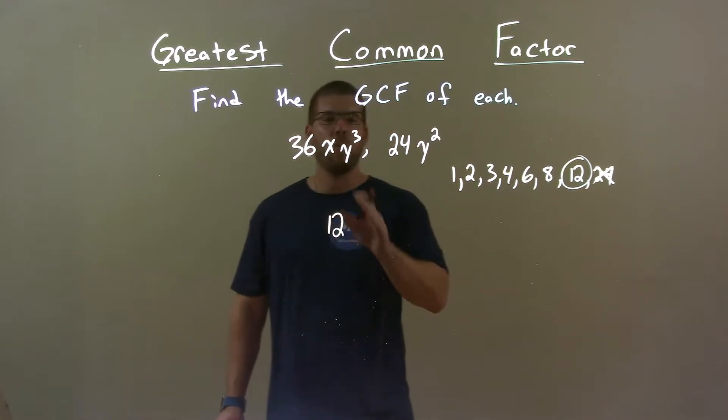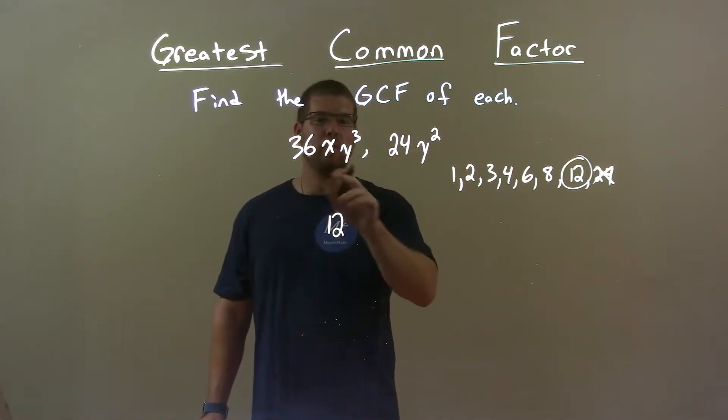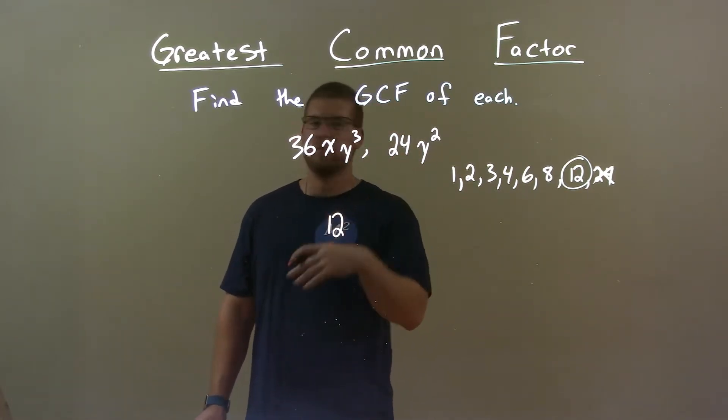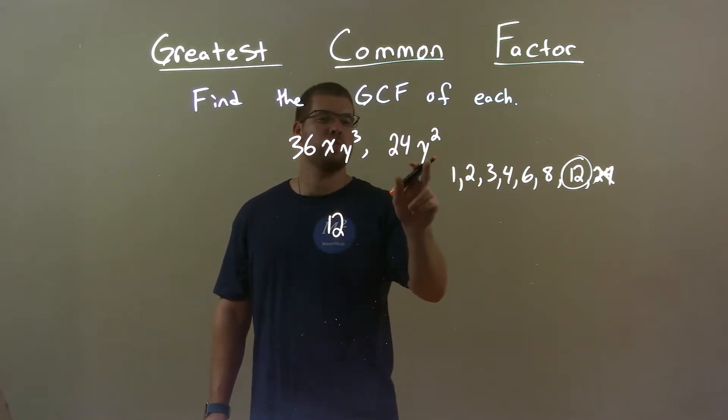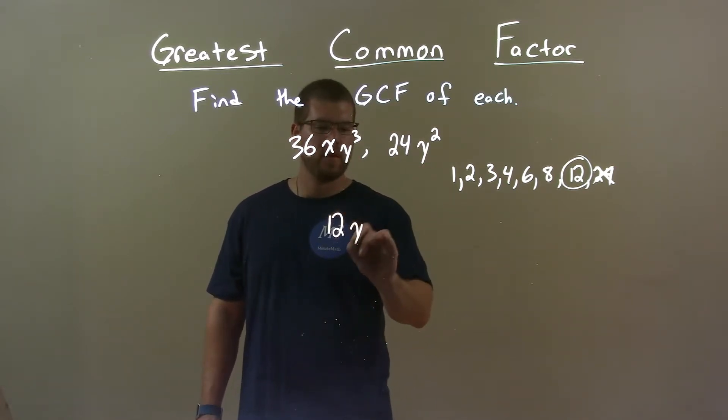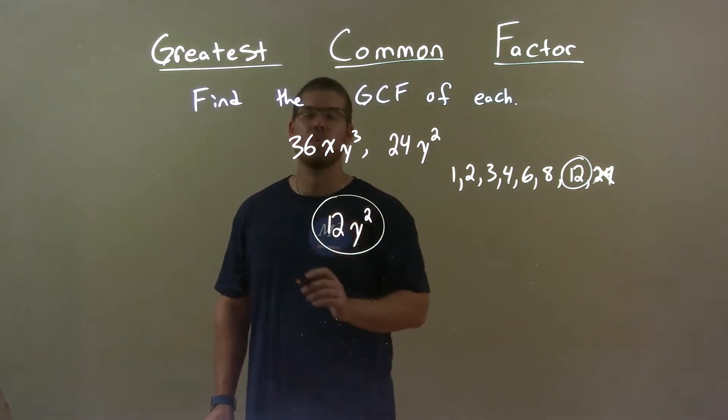Now let's deal with the variables. Well, how many variables are shared by both? There's not an x in both of these, so don't worry about the x. I have 3 y's here and 2 y's. So 2 y's are shared between the two. So we have y squared. And together, our GCF is 12y squared.